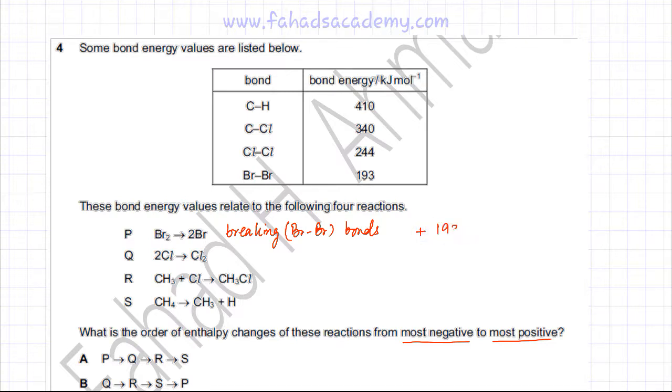Let's look at reaction Q. In reaction Q, you have two Cl atoms and they combine to form a molecule of Cl2. So in this reaction, you're forming, instead of breaking, you are now forming a Cl-Cl bond. There's only one Cl-Cl bond that's being formed, and the Cl-Cl bond energy is given as 244, but this time it's going to be minus 244 because bond formation is exothermic. It always releases energy, so instead of positive, now it's negative because you're forming bonds.